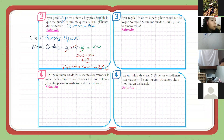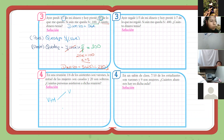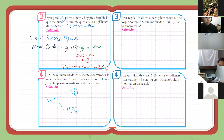Vamos rápidamente con el último ejercicio. Dice: en una reunión, un sexto de los asistentes son varones. La mitad de las mujeres son casadas y veinte son solteras. Un sexto son varones, entonces las mujeres serían el complemento: cinco sextos. Muy bien, ¿qué más me dicen acá? Dice que la mitad de las mujeres son casadas. De las mujeres, hay una parte que son casadas y otra que son solteras.